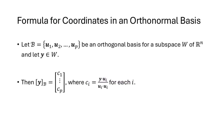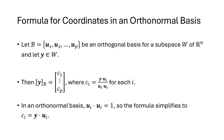We also have a nice formula for coordinates of a vector when we have an orthogonal basis. When script B — the set u1 through up — is an orthogonal basis for a subspace W of Rn and y is a vector in W, the coordinates ci equal y dot ui divided by ui dot ui. When the basis is orthonormal, ui dot ui equals 1, so the coordinate formula simplifies to just y dot ui. All we do is take the dot product of our vector with each basis vector.